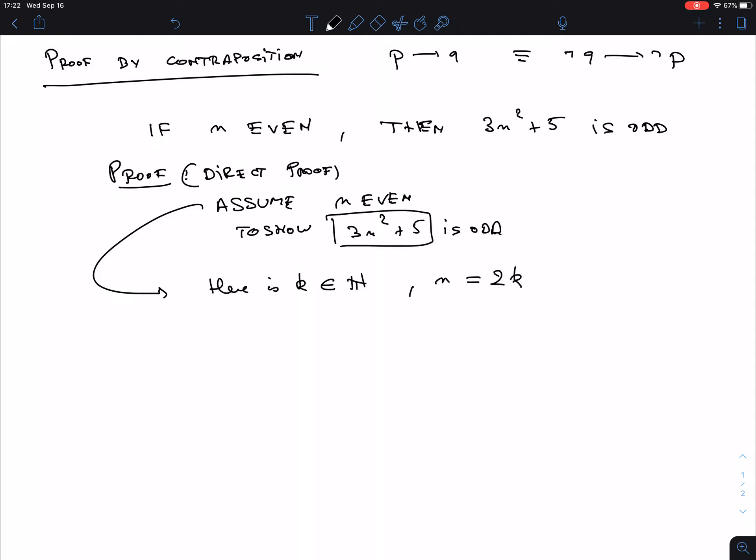about this 3n squared plus 5. The way to do that is just to plug in: 3n squared plus 5, I'm gonna plug this in here. That is 3 times (2K) squared plus 5. I have to work that out: 3 times 4 times K squared plus 5, that is 12K squared plus 5. But that's not really what I want.